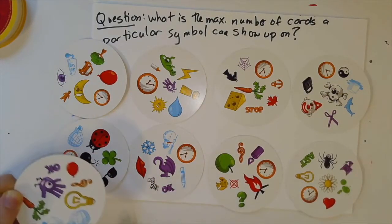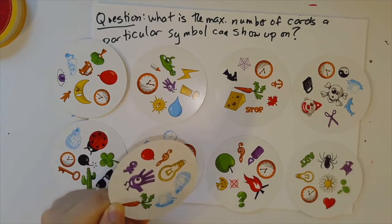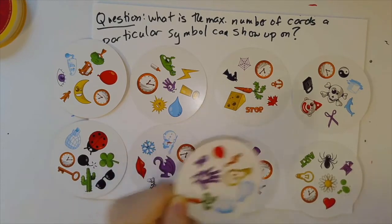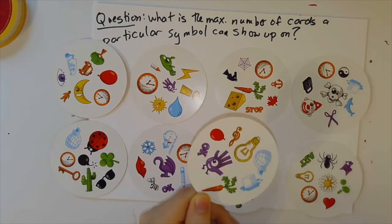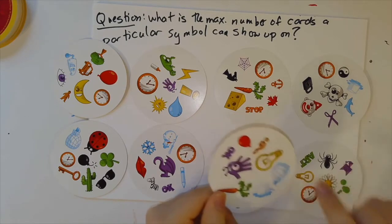And then the okay symbol. And then you'd think it would be easy by now, the music note. And finally, the light bulb. There we go.